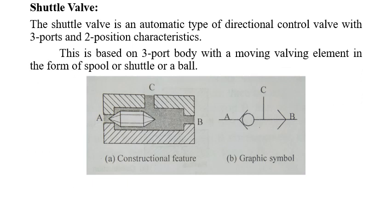The shuttle valve is an automatic type of direction control valve with three ports and two-position characteristics — it has only two-position operation but three ports. It is based on a three-port body with a moving valve element in the form of a spool, shuttle, or poppet. Ports A and B are the pressure/air supply ports; depending on which side has higher pressure, it will close the opposite side port. Port C is always the output port. If equal pressure is supplied to both sides simultaneously, the output is still obtained.